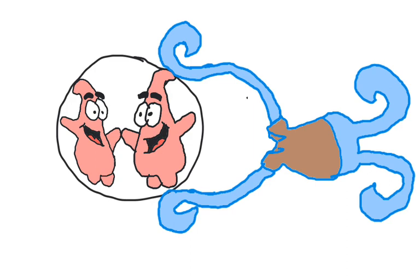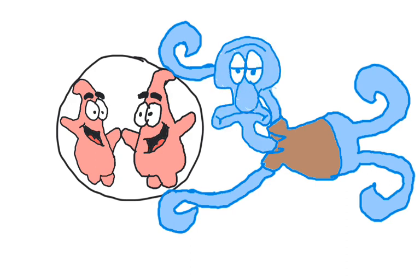There is also a dorsal root ganglion, which contains the cell bodies of sensory neurons, but there is no corresponding structure on the ventral side. Altogether, the peripheral nervous system looks a bit like Squidward.